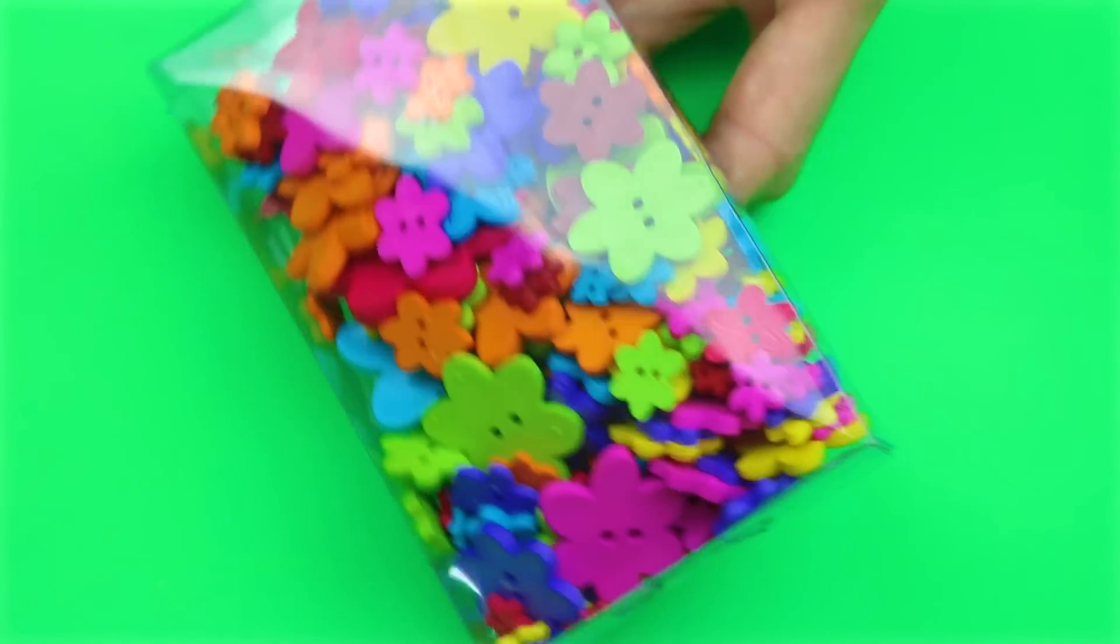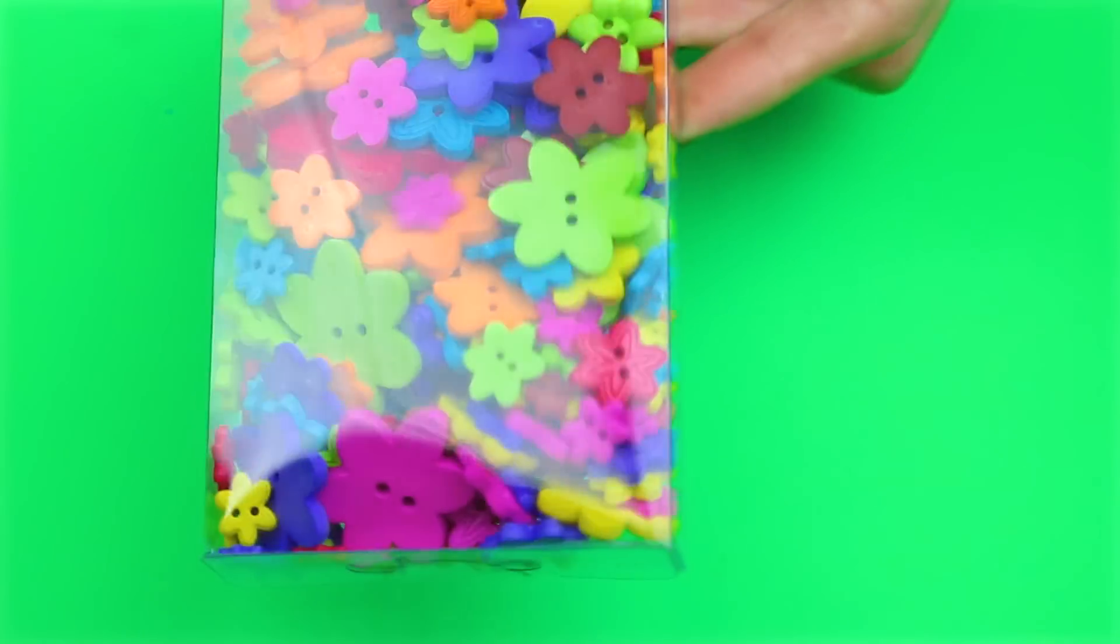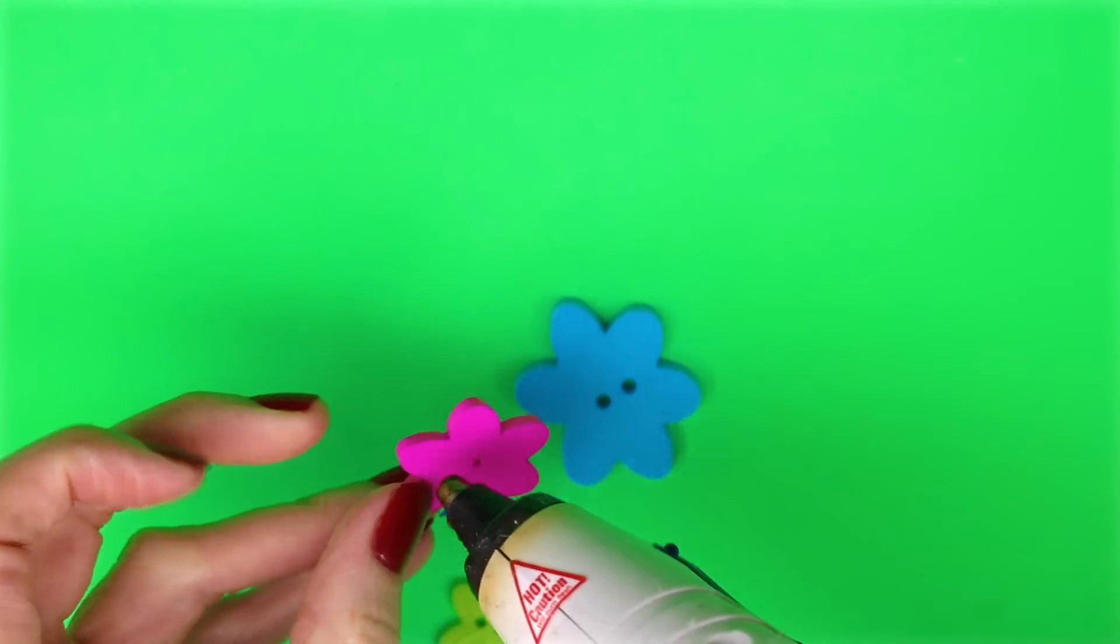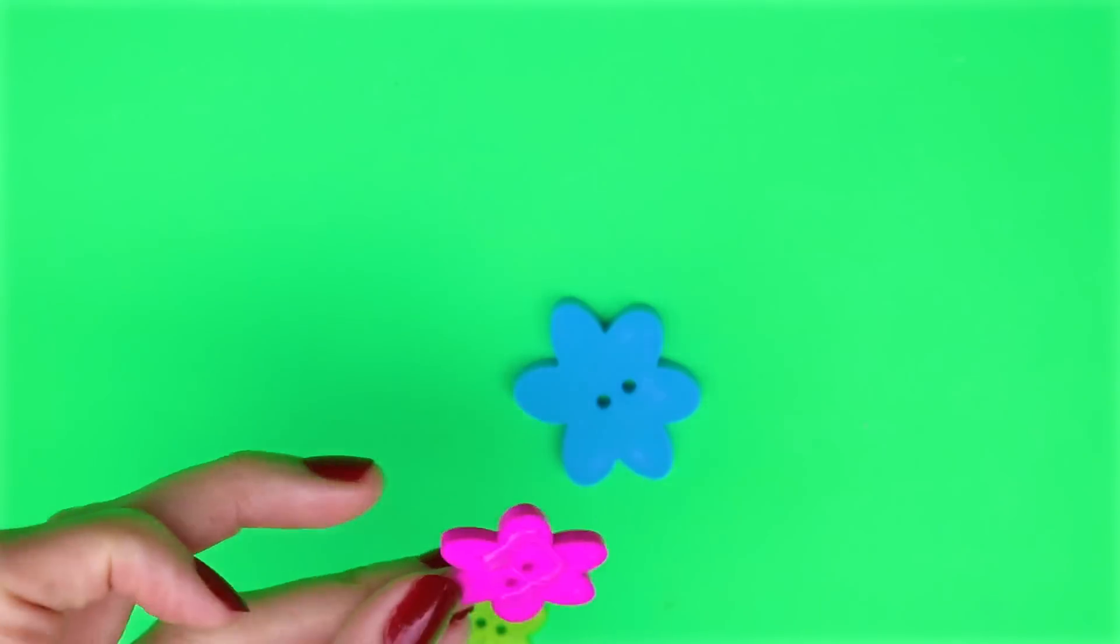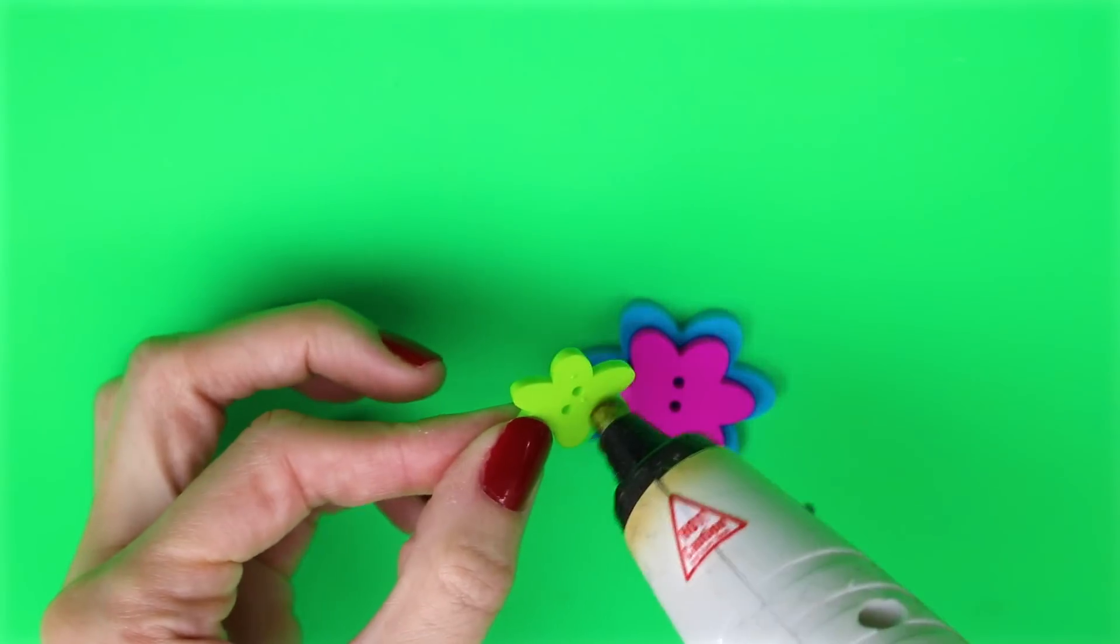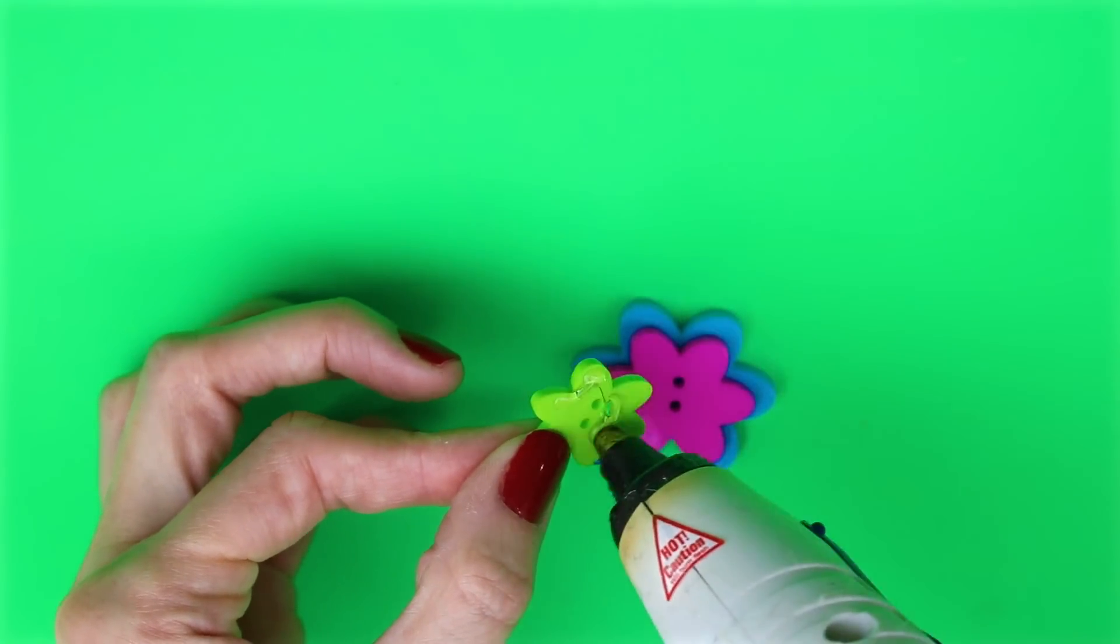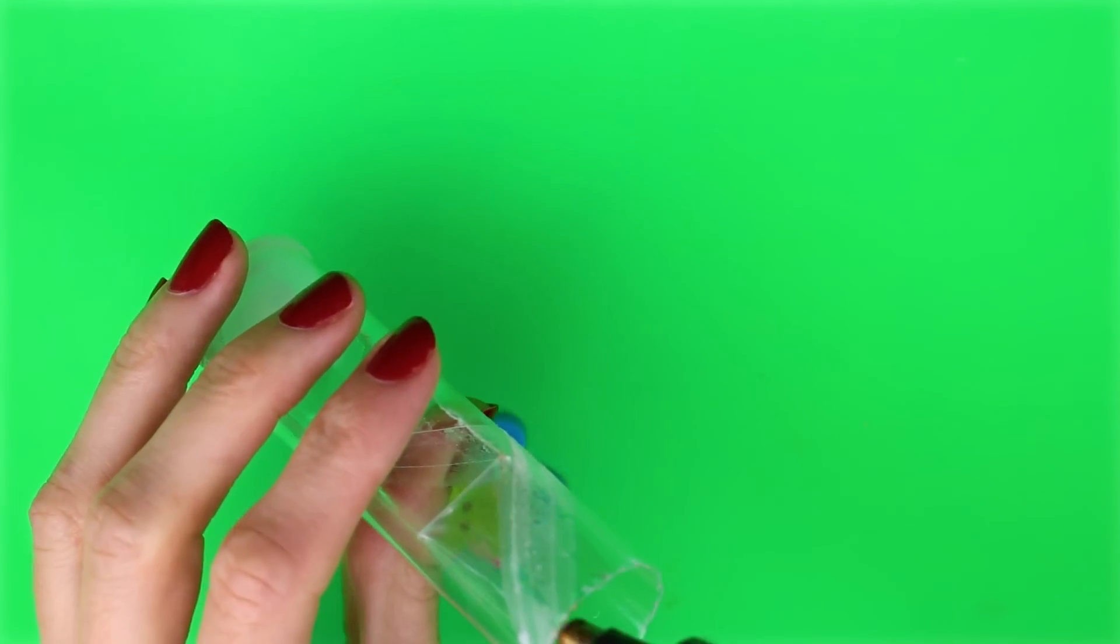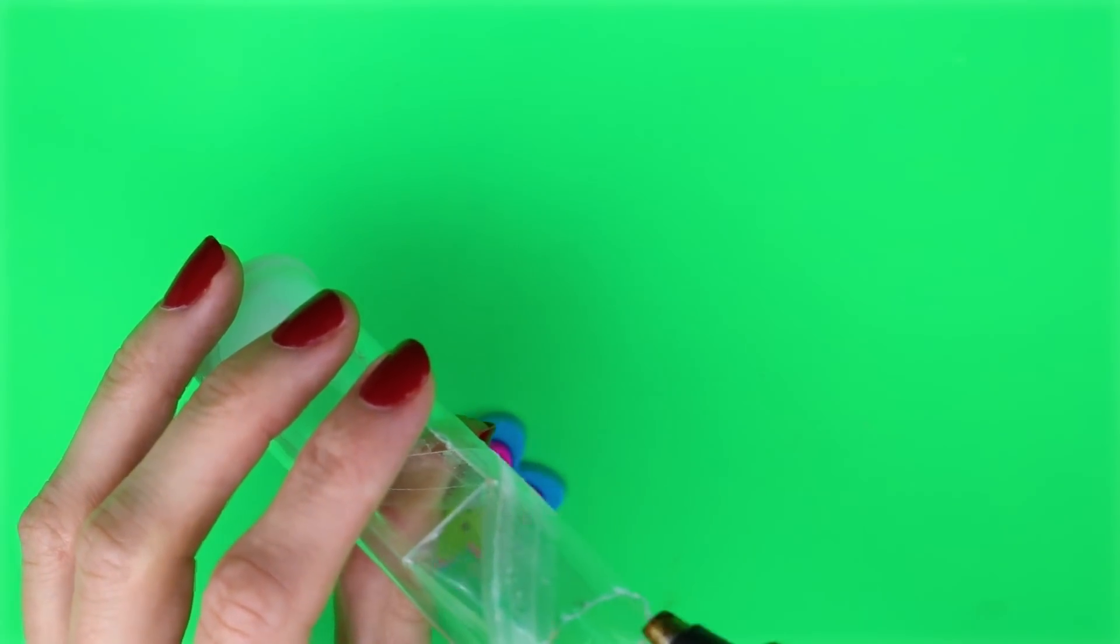To make the handle I'm going to use some of these flower buttons. What I did was I just took three different sizes, stacked those on top of each other and then hot glued them together. Glue the flower buttons to the candy cane container.